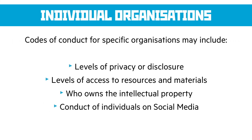What about individual organisations? Codes of conduct for specific organisations are more likely to include general advice for how to work in that environment — the levels of privacy or disclosure you're allowed to make. For instance, if you get a job working for Apple, the amount of disclosure you can make is very limited; you can't talk about the projects you're working on publicly, whether on social media or to your friends. They'd also talk about levels of access to resources and materials — who's allowed to see and edit what. Who owns the intellectual property you're creating is massively important; normally it would be the organisation itself. If you work for a company for two years on a piece of software, you usually have absolutely no rights over it. Finally, your conduct on social media is very important — you must not make a fool of yourself online and bring the company into disrepute.